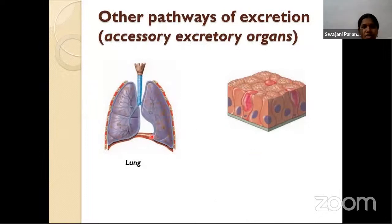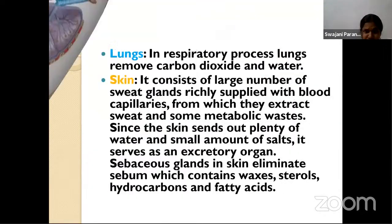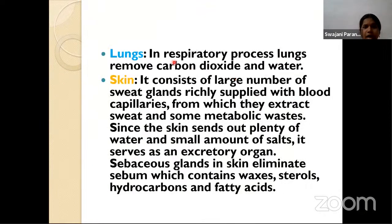Other pathways of excretion: Lungs expel CO2 released by cells during metabolic activities. CO2 enters the alveoli and exits the body via lungs. Lungs remove carbon dioxide and water from the body. Skin is also an excretory organ. It consists of a large number of sweat glands richly supplied with blood capillaries, from which they extract sweat and metabolic waste.